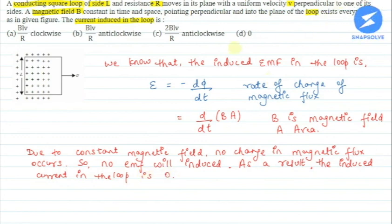So if we see, option D is 0, so this will be the correct option. Therefore, the correct option is D. So this is all about the question, I hope you have understood it. Thank you.